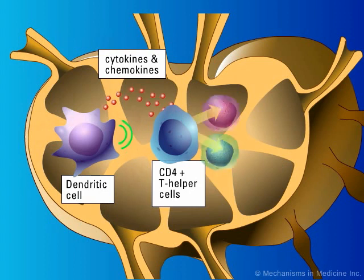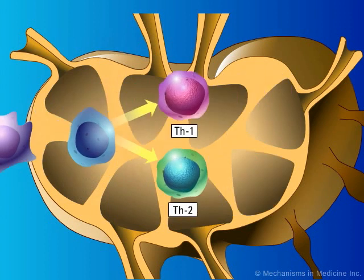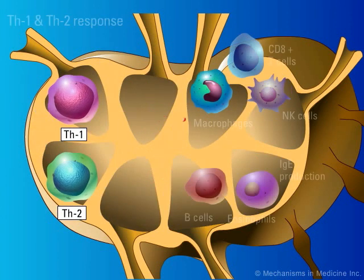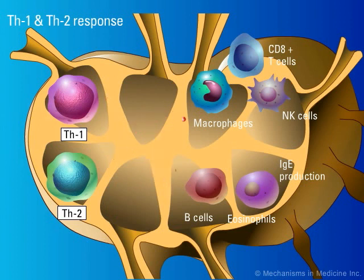CD4 T cells are stimulated to differentiate to Th1 and Th2 cells. Th1 responses favor activation of macrophages, B lymphocytes, CD8 T lymphocytes, natural killer cells, and neutrophils.